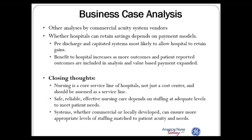Closing thoughts: go talk to the acuity system vendors for additional analyses. Whether hospitals can retain savings depends on the payment models, and hospitals should want the most inclusive payment models they can get — bundled payments and capitated payments rather than simple per-admission charges. Nursing is a core service line of hospitals, not just a cost center, and should be assessed as a service line. Safe, reliable, effective nursing care depends on staffing at adequate levels, and we have systems — both commercial and locally developed — that can assure more appropriate levels of staffing matched to patient acuity.